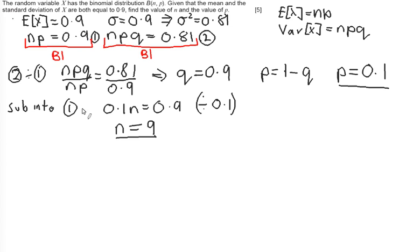You're then going to get a method mark for the division of the two equations. And you are then going to get your accuracy mark. Having found that q equals 0.9, you're going to get your mark here for finding that p equals 0.1. Finally, your last mark is then given for finding that n equals 9.